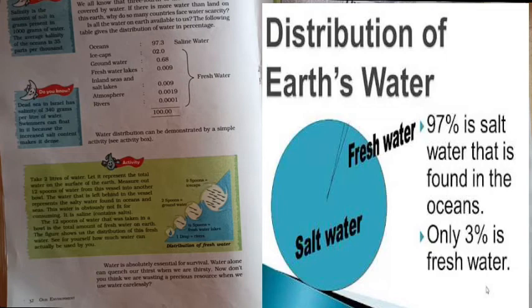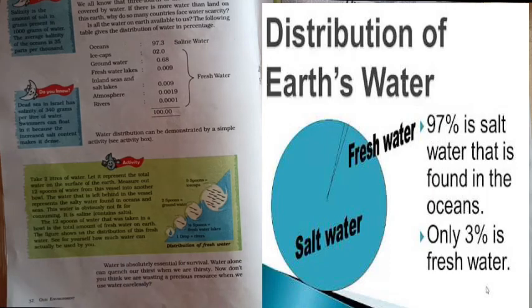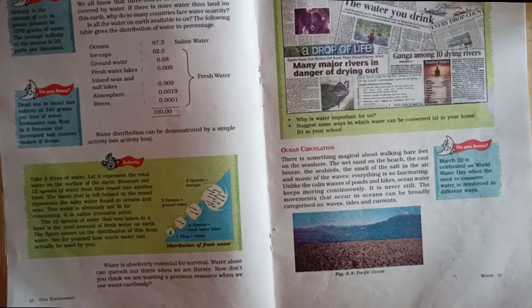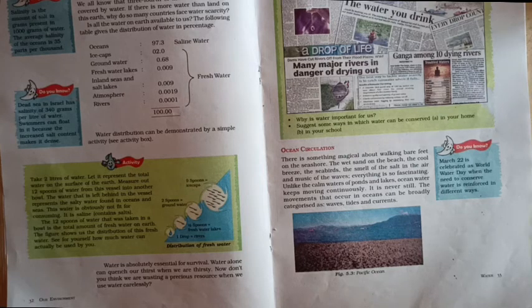As a result, fresh water increases and ocean water is a huge reservoir of different kinds of salt. Children, there is an activity in your textbook on page number 35 which shows how water distribution can be demonstrated by a simple activity. Read this activity thoroughly to understand how the water distribution is shown. Water is absolutely essential for our survival and so we have to use water very carefully, as water is a very precious natural gift to us.